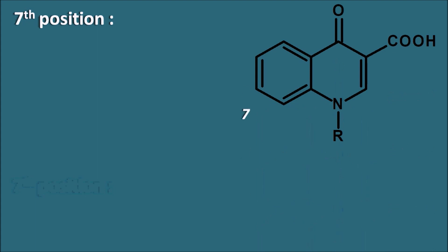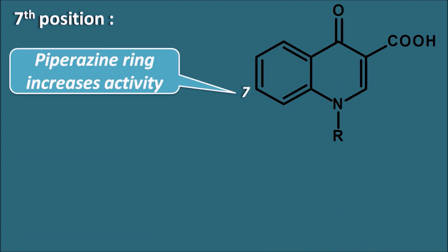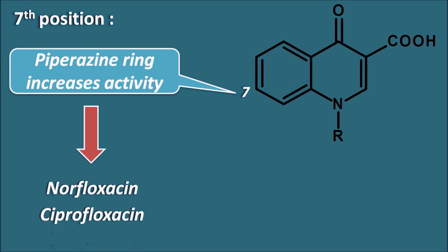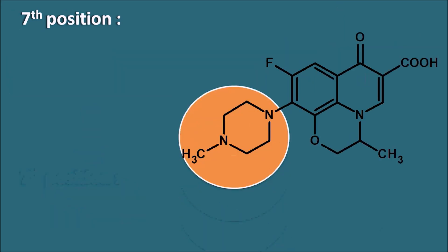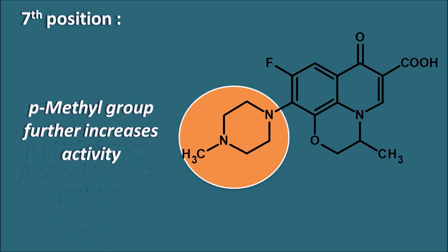At the seventh position, a piperazine ring increases the activity. This piperazine ring is present in drugs like norfloxacin and ciprofloxacin, which have extended activity against gram-negative bacteria compared with nalidixic acid. Nalidixic acid does not have a piperazine moiety at position 7, whereas norfloxacin and ciprofloxacin do. Ofloxacin has a piperazine ring with a methyl group at the para position, and this para-methyl group further increases activity. Ofloxacin is a second generation fluoroquinolone with extended activity towards Staphylococcus infections.